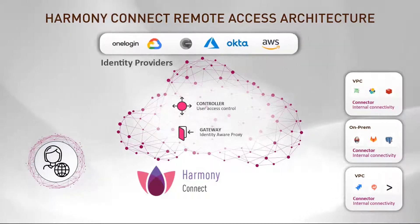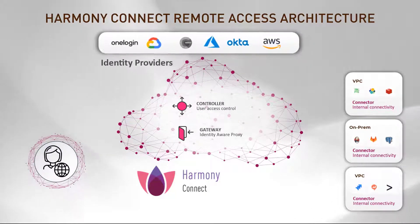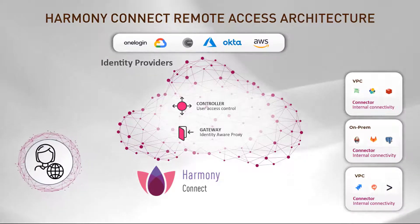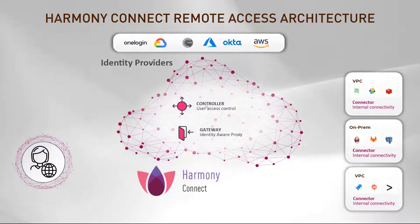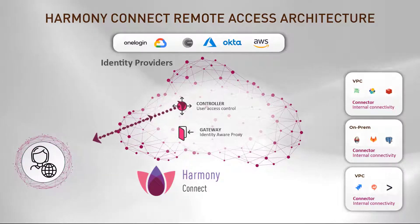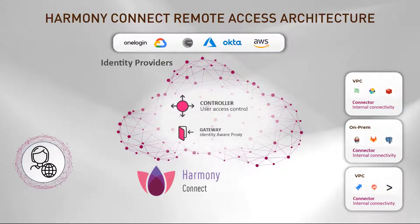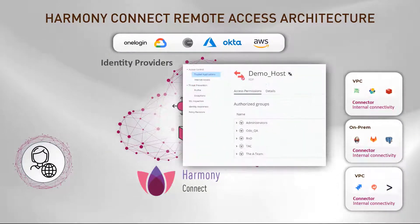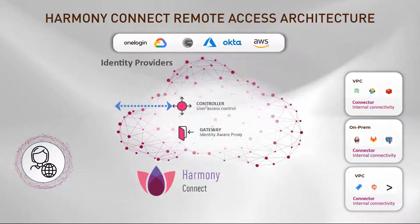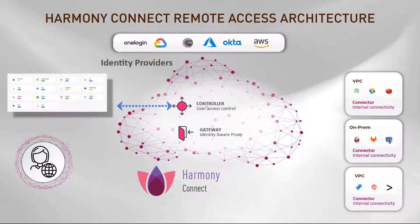The Identity Provider manages the user's authentication and access. When a user first authenticates to the Controller, their credentials are verified by the selected identity provider. The Controller then matches the request with application access rules and exposes the user to authorized applications on their user portal.